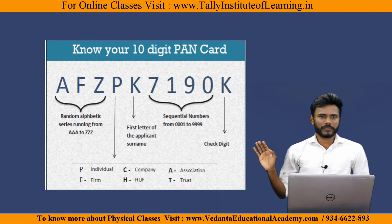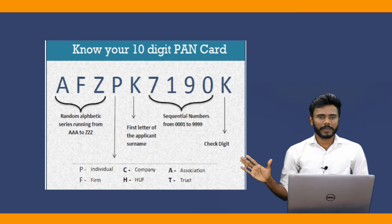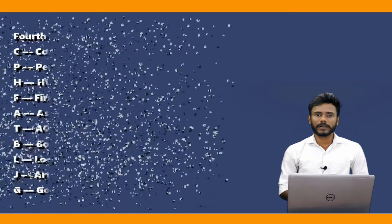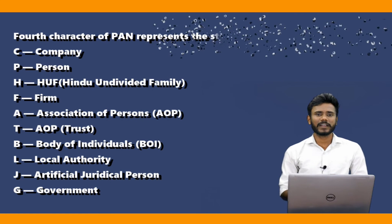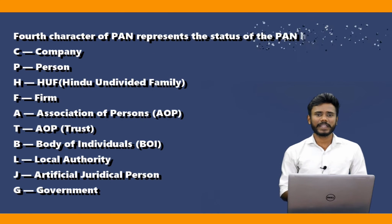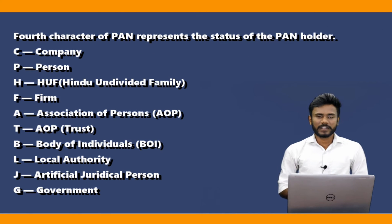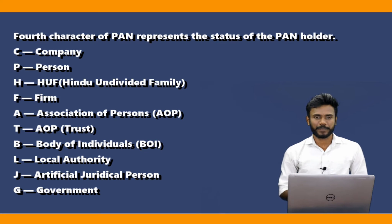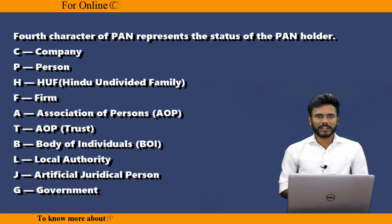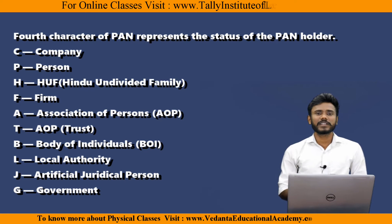Out of the first 5 alphabet characters, the 4th character is significant. If the 4th character is P, the PAN card belongs to an individual person. If the 4th character is F, the PAN card belongs to a firm. If the 4th character is C, it belongs to a company.